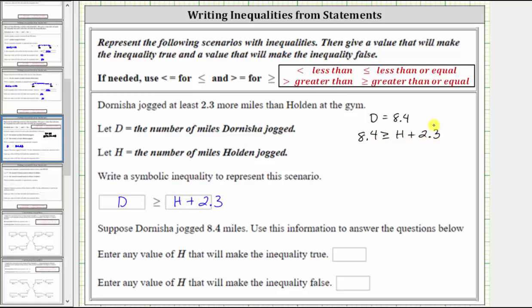We could answer these last two questions with the inequality in this form, but let's solve it for H. To solve this inequality for H, we need to undo this addition by performing the opposite operation. Therefore to undo plus 2.3, we subtract 2.3 on both sides of the inequality, just like we solve an equation.